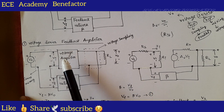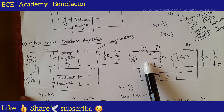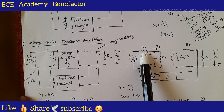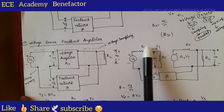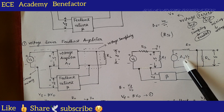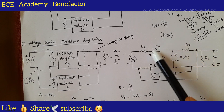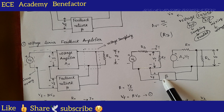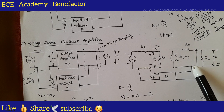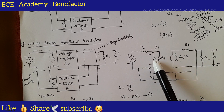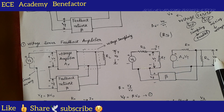Now replace this voltage amplifier by its equivalent circuit. The voltage source V s will have its internal resistance R s — the source resistance of value R s. The internal resistor R i, the dependent source A v V i, and output resistance R naught form the voltage amplifier. R L is connected at the output. The feedback network of ratio beta is connected in shunt at the output side and in series at the input side. V s, V i, A v V i, V naught, and V f are shown.